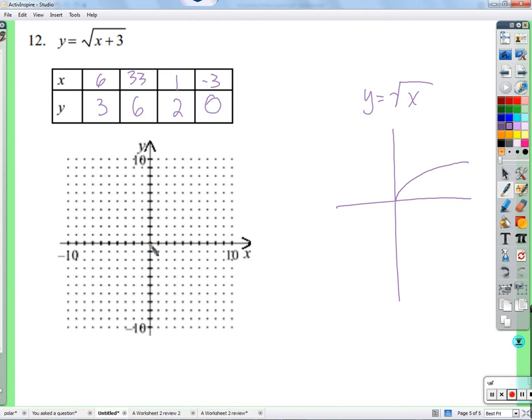I did one. One plus three is four. Square root of four is two. Negative three. I like that you're doing negative. Negative three plus three is zero. Square root of zero is zero. We've got some good points here. Doesn't that look a lot like this one? Yes. But it's different.